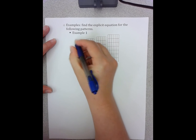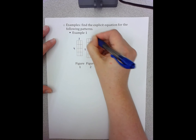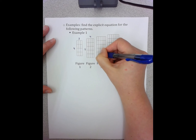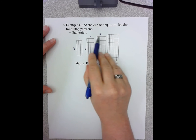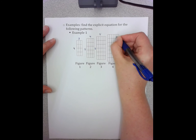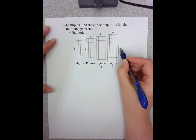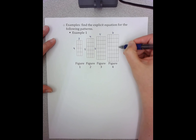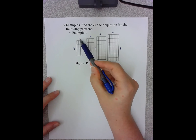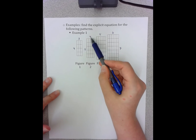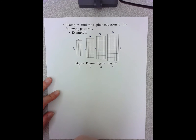I'm going to write the dimensions of each of these rectangles to help me see the pattern. The first rectangle is 3 by 4, the next is 4 by 5, then 5 by 6, and 6 by 7. I can see that as I go to the next figure, I'm adding 1 on one dimension and also adding 1 on the other. Now I'm interested in writing the explicit, so I have to see a pattern between the figure number and these two dimensions.